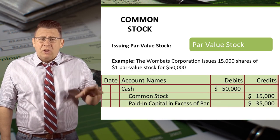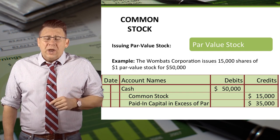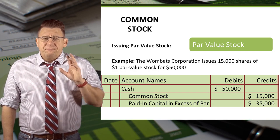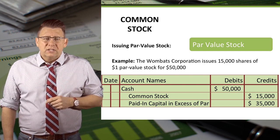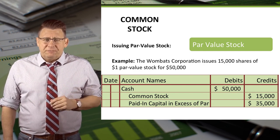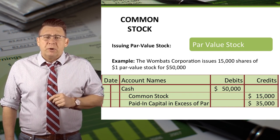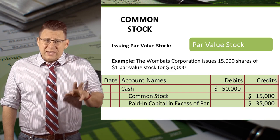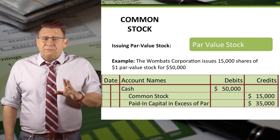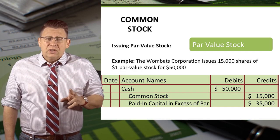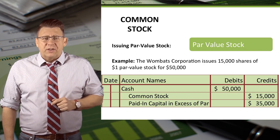In this next example, the Wombat Corporation issues 15,000 shares of one dollar par value stock for $50,000. This is a much more common occurrence. Cash is debited for $50,000 and common stock is always credited for its par value, which in this case is $15,000. Finally, the difference is credited to an account called paid-in capital in excess of par for the amount of $35,000.